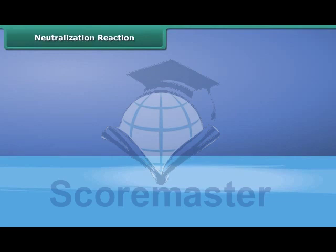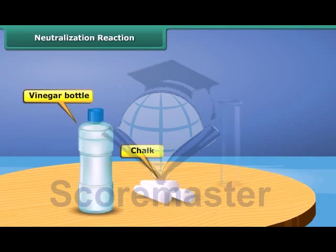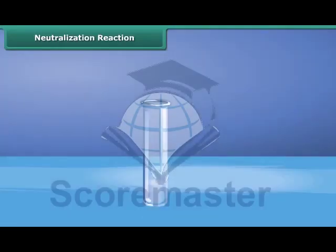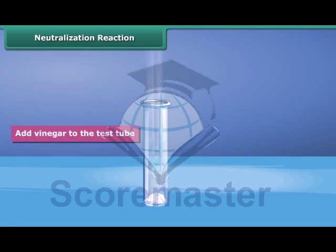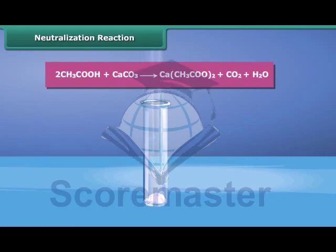To understand the neutralization reaction, drop some crushed chalk into a test tube and add vinegar. The chalk reacts with the vinegar and bubbles of carbon dioxide come out. A white solid — calcium acetate — is formed. Chalk is calcium carbonate; when acid reacts with it, carbon dioxide, water, and calcium acetate are formed. Thus, an acid reacts with a base to form a salt.